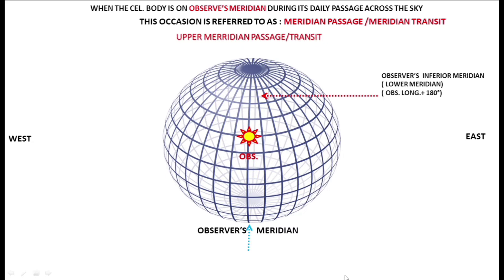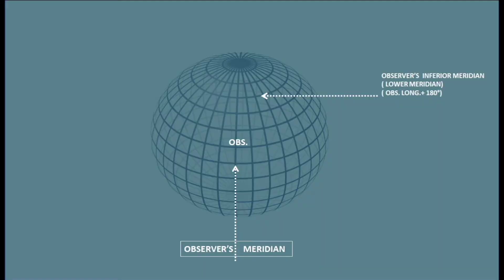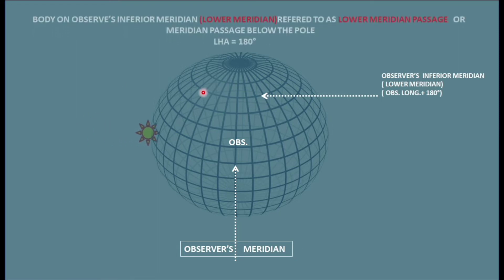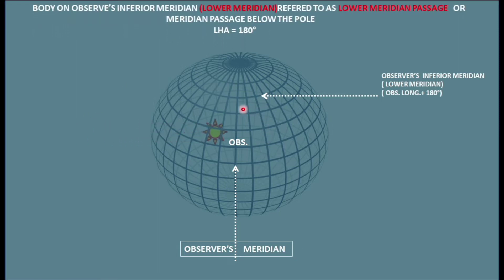When the body is on our meridian, we refer to it as upper meridian passage or upper transit. The sun does not stop there — it continues on its path, starts setting, and its motion continues. It keeps going round, and then it comes on the observer's inferior meridian, which is 180 degrees. This particular time when it comes on the observer's lower meridian, we refer to it as lower meridian passage or meridian below the pole.